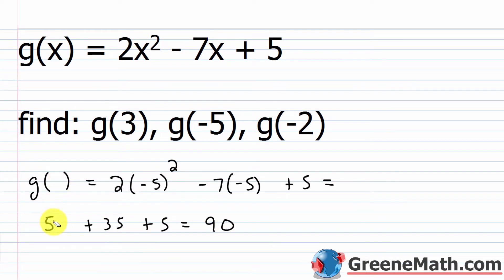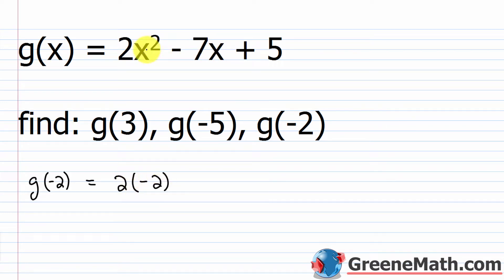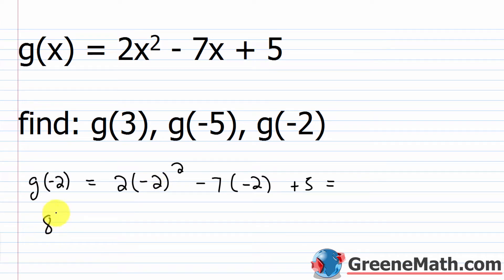Then for g of negative 2, I plug in negative 2 everywhere I see an x: 2 times negative 2 squared minus 7 times negative 2 plus 5. Negative 2 squared is 4 — the negative is inside the parentheses — times 2 is 8. Negative 7 times negative 2 is positive 14, so plus 14, then plus 5. So 8 plus 14 is 22, and 22 plus 5 is 27.